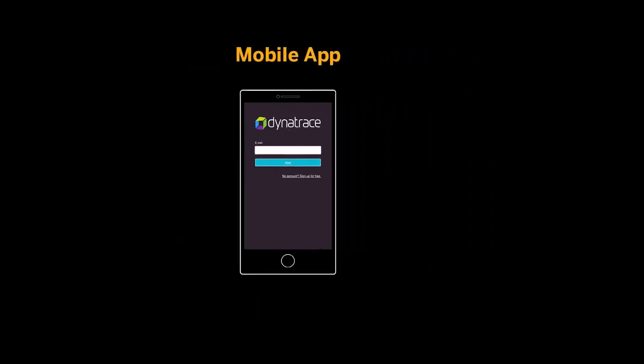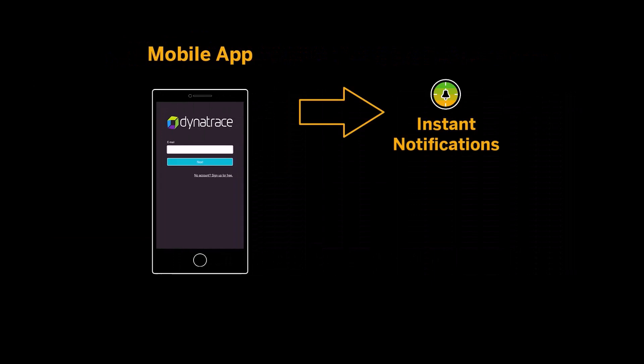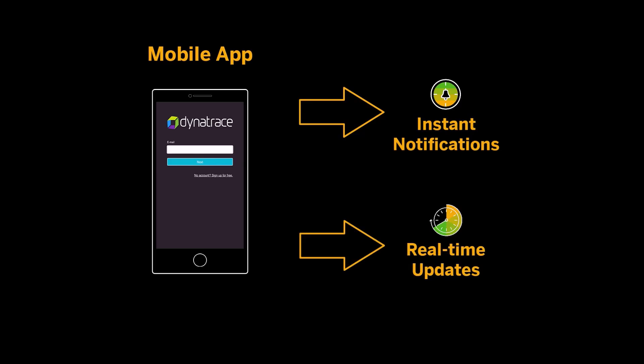The Dynatrace mobile app provides instant notifications about issues detected in SAP commerce environments. It also provides real-time updates on problems, enabling you to continuously monitor them.